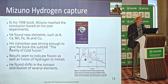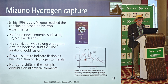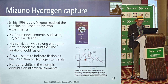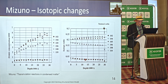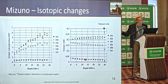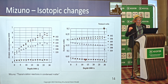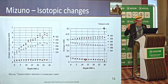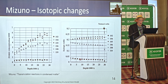His conviction was strong enough to give his book the subtitle 'The Reality of Cold Fusion.' Results seem to indicate fission as well as fusion of hydrogen to metals. He even found shifts in the isotopic data — it's quite clear that in relation to depth, the different isotopes of palladium actually change. The lightest isotope, near the surface, is actually increasing, while others are decreasing. So we need an explanation for that.